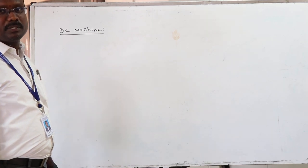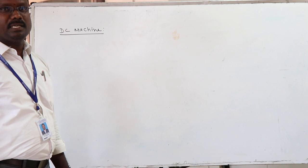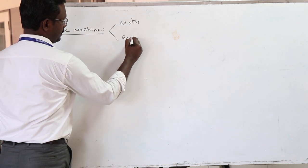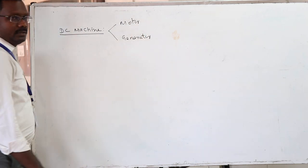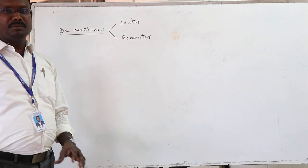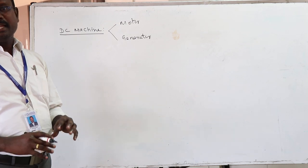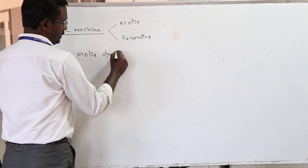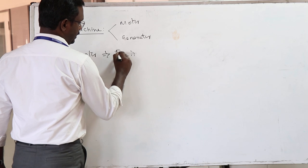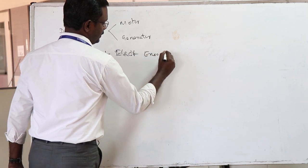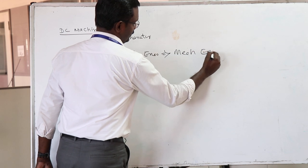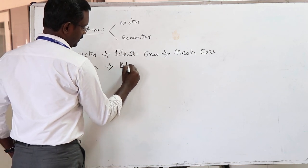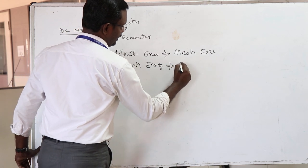Good morning. Now we are going to discuss about DC machines. A machine can be a motor or generator. A motor is a machine which converts electrical energy into mechanical energy. A DC generator converts mechanical energy into electrical energy.